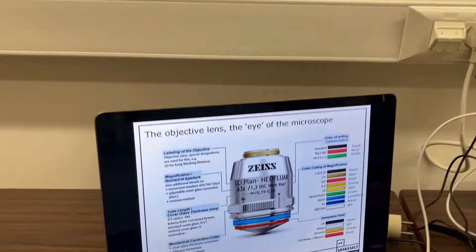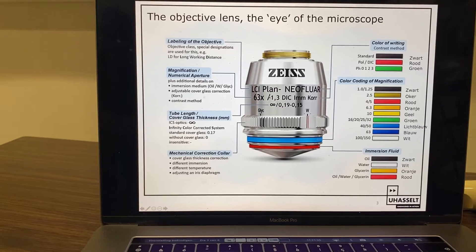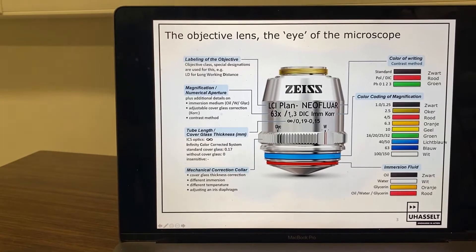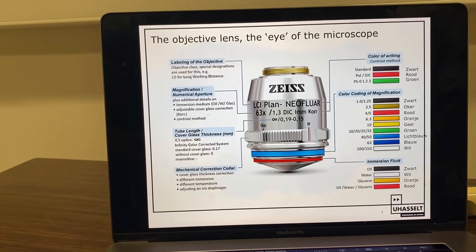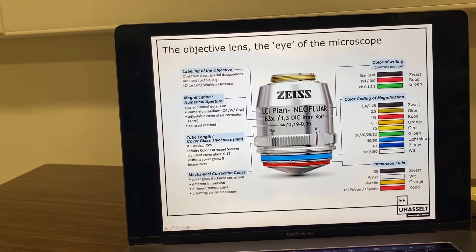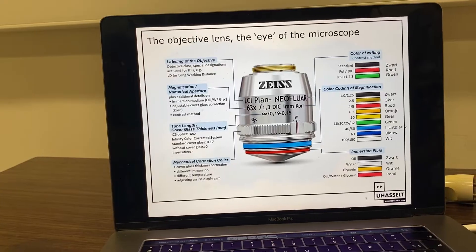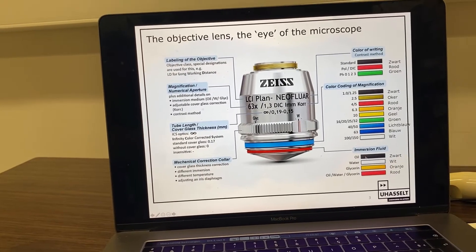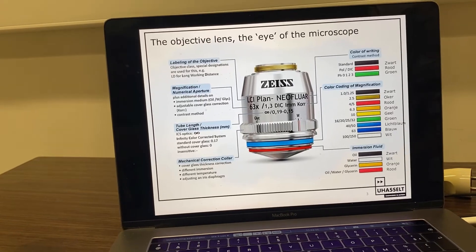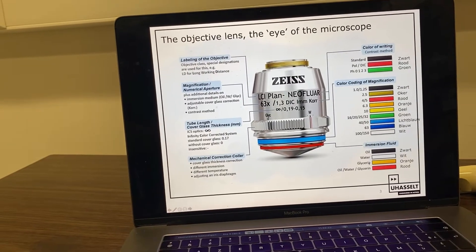On objective lenses there's typically a lot of interesting and useful information written — the magnification, of course, but there's also the numerical aperture. This is a number between roughly 0.1 and 1.5, and the higher this number, the better the resolution of the resulting image. There are also color codings on these objective lenses: one typically indicates the magnification, so it's easy to recognize it just by looking at the color. A second color coding often refers to the immersion fluid used. Many objective lenses can be used in air, but higher magnification, higher resolution images often require immersion in water, oil, or other substances.